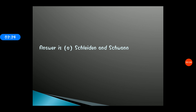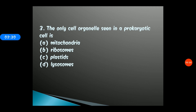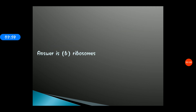Question 3: The only cell organelle seen in the prokaryotic cell is — options: A) Mitochondria, B) Ribosomes, C) Plastids, D) Lysosomes. The correct answer is option B, Ribosomes. Only ribosomes are clearly visible in prokaryotes.